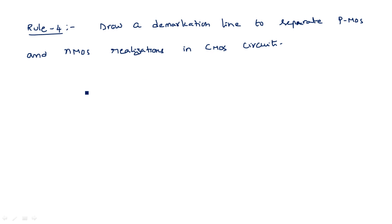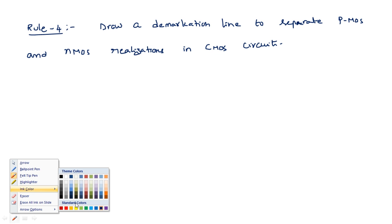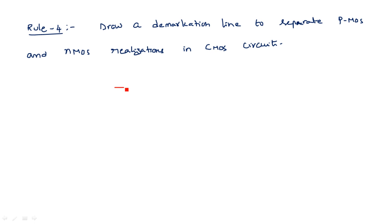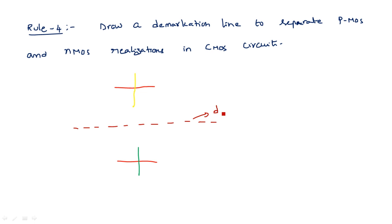The demarcation line is shown in brown color as a dashed horizontal line. For example, draw the NMOS transistor using green color and the PMOS transistor using yellow color, then draw the brown dashed demarcation line between them. This separates the pull-up network (PMOS transistors) from the pull-down network (NMOS transistors). These are the four rules one should definitely follow when designing stick diagrams. Thank you.